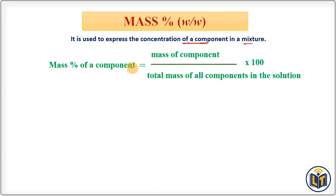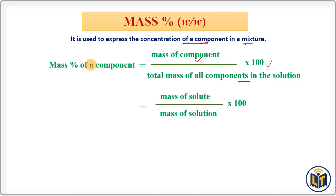The formula is: mass percentage of a component in a solution equals the mass of that component divided by the total mass of all components in the solution, multiplied by 100. For solute or solvent: mass percentage of solute equals mass of solute divided by mass of solution, multiplied by 100. For solvent, use mass of solvent in the numerator instead.